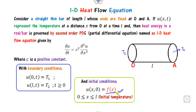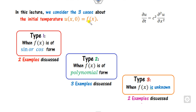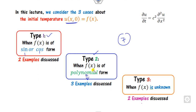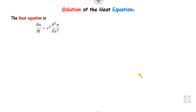The objective of this lecture is to see the various cases. We will discuss three cases and seven examples in this presentation: when the initial temperature is in sine and cosine form, when it is in the form of a polynomial, and when the initial temperature is unknown. We will discuss the respective examples for each.